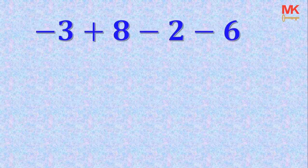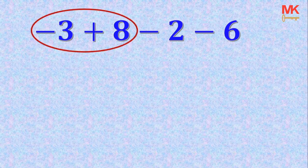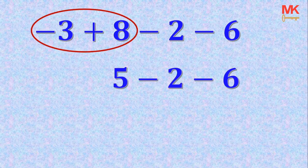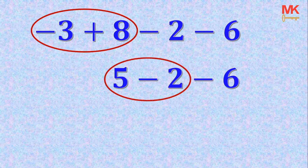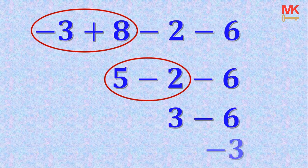This method does not only apply to only 2 numbers. We can also have numbers like this: negative 3 plus 8, take away 2, take away 6. All you need to do is just to take it 2 at a time. Negative 3 plus 8 is 5, and the whole expression becomes 5, take away 2, take away 6. Then you take your next 2, 5 take away 2, and that's 3. So everything becomes 3, take away 6. And 3 take away 6 is just negative 3.